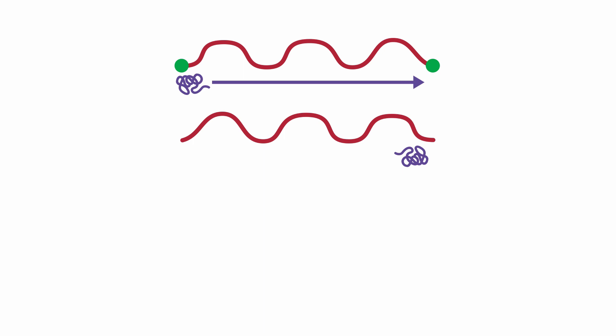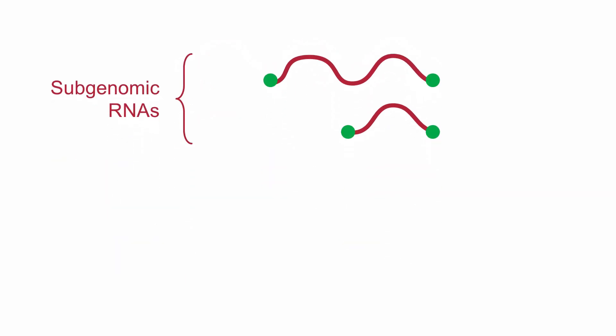But the RDRP doesn't always replicate the entire viral genome. Sometimes it stops early and creates shorter RNA strands, which are known as subgenomic RNAs. The host ribosomes translate these pieces of subgenomic RNAs into proteins.